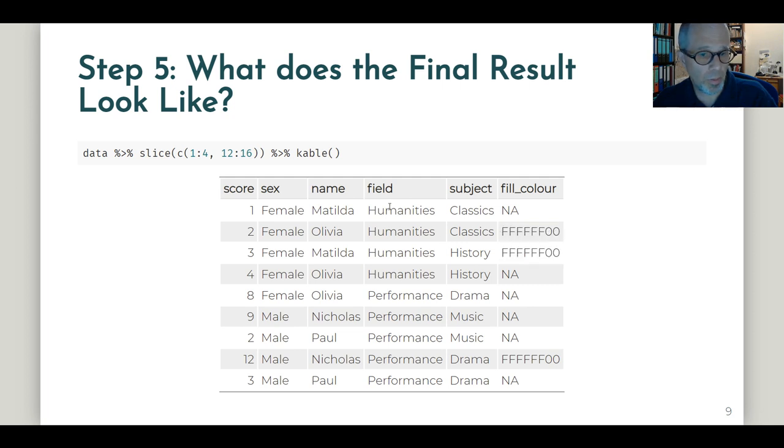Note that I don't display the full data here. I used the slice function from dplyr so that we get to see these three highlighted cells and a couple of other cells that were not highlighted.